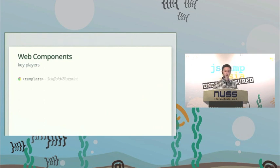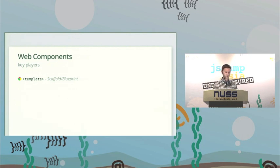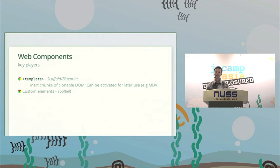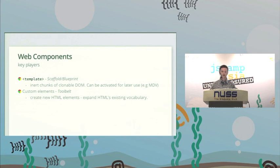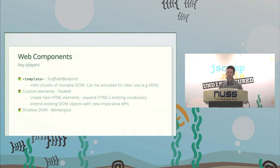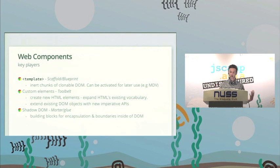The key players in this ecosystem are: templates — you can scaffold out markup and use it later; we have this in MVC frameworks today but it's coming natively to the web platform. Custom elements — you'll be able to define your own markup, customize markup, and extend HTML's native capabilities with your own vocabulary. And the last major piece is Shadow DOM. Shadow DOM is crazy cool, and it's really the mortar and glue behind web components as an umbrella of technologies.